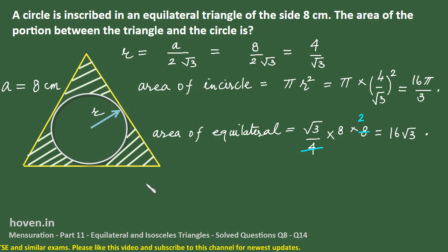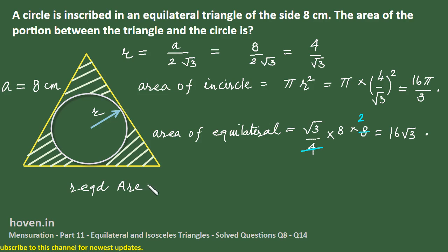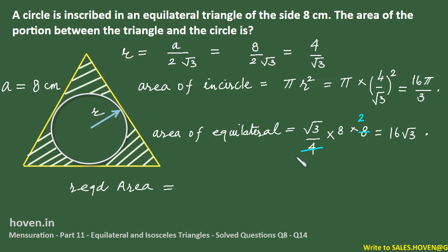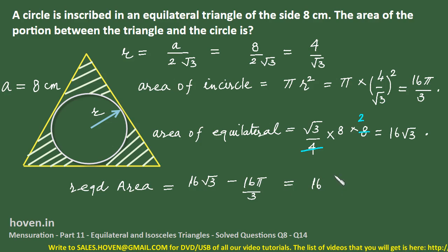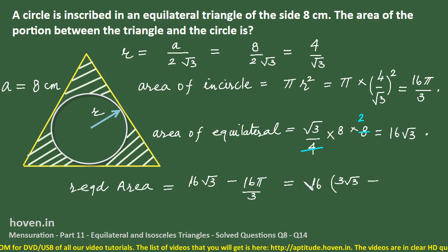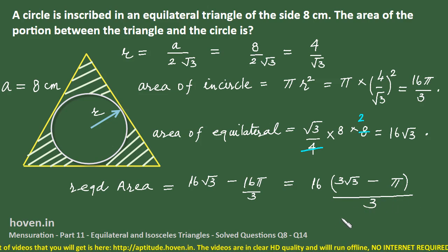The required shaded area equals the area of the entire equilateral triangle minus the area of the incircle. We can write it as 16√3 minus 16π/3, which equals 16 × (3√3 − π) / 3. This is the answer for the required area.